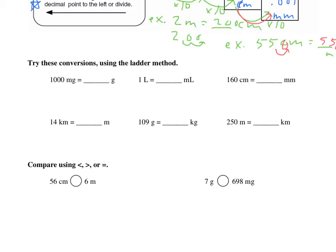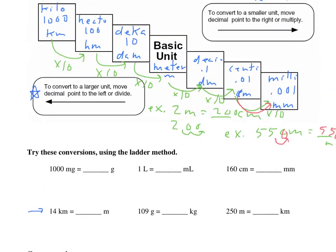Let's do 14 kilometers to meters. We're going to be going from kilo here to meters, so that's one, two, three jumps. We have 14, decimal point's there, one two three jumps, decimal point goes there, throw in your placeholder zeros, and you get 14,000 meters. That should make sense because one kilometer is a thousand meters, so 14 kilometers will be 14,000 meters.